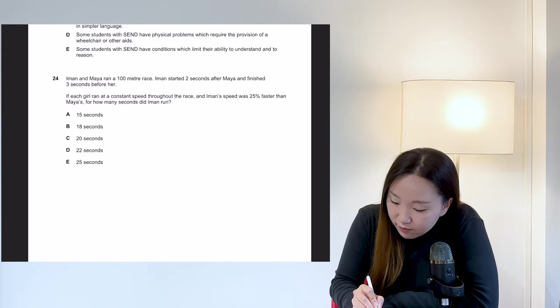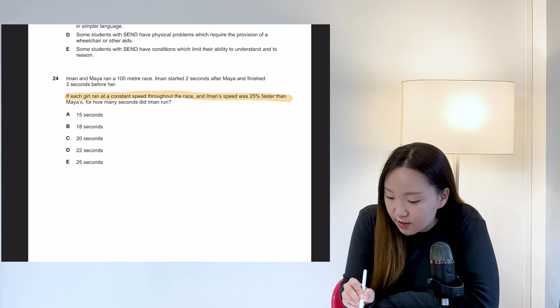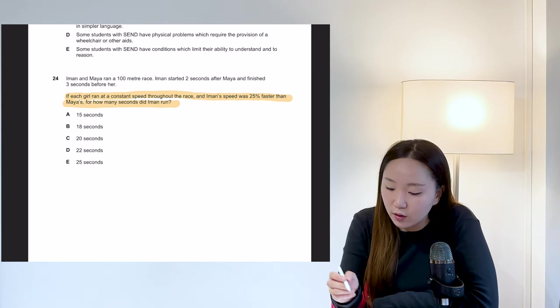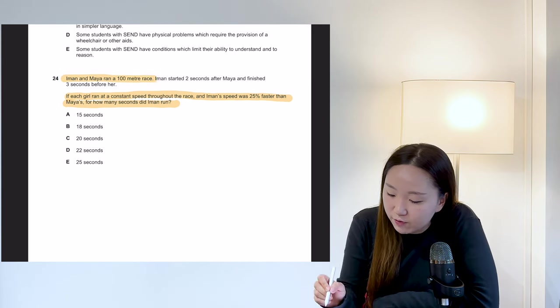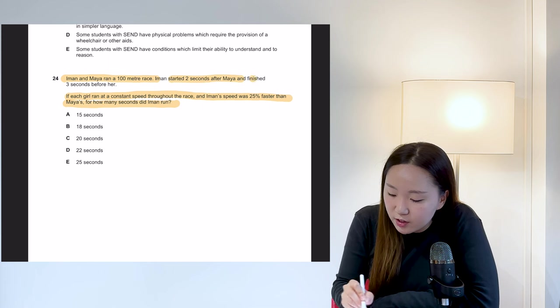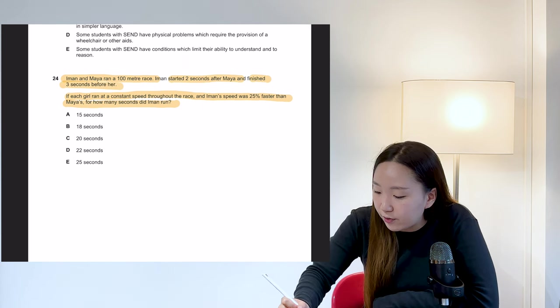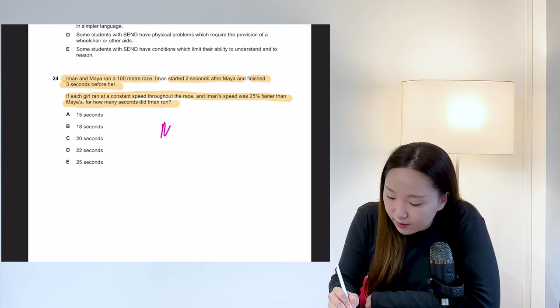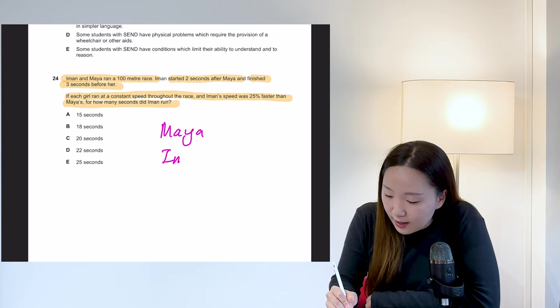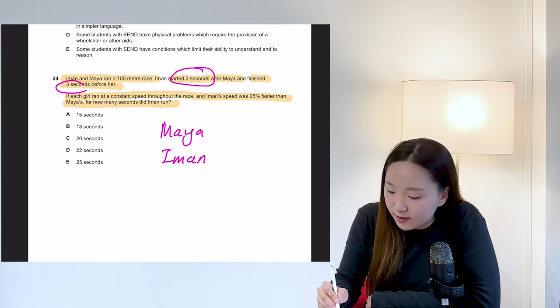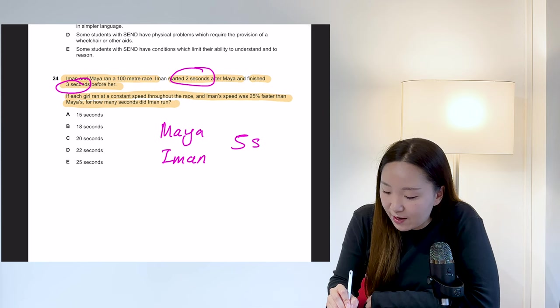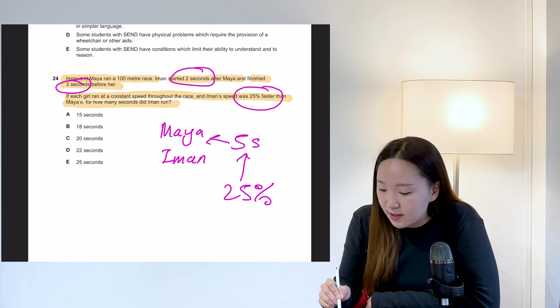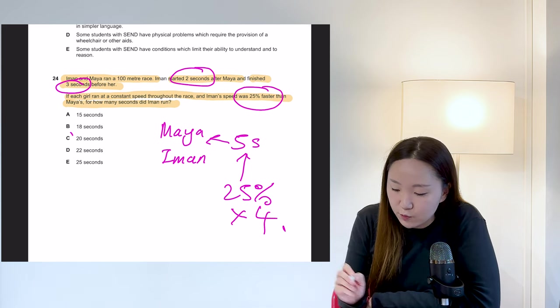Okay. If each girl ran at a constant speed throughout the race and Iman's speed was 25% faster than Maya's, how many seconds did Iman run? For how many seconds did Iman run? So we're looking for two girls, Iman and Maya, they've run a race. Iman started two seconds after Maya finished three seconds before her. So again, this is a super simple question. So we're just looking at Maya and Iman and Iman has run a total of five seconds faster than Maya. And Iman was 25% faster. So five seconds is 25%. So just times that by four. So Iman must have been running for 20 seconds.